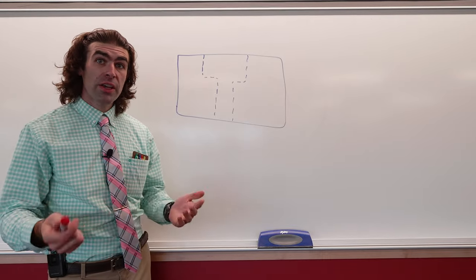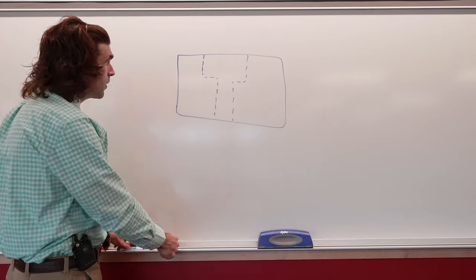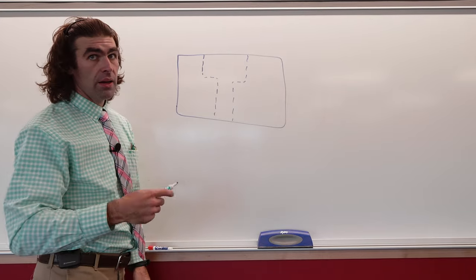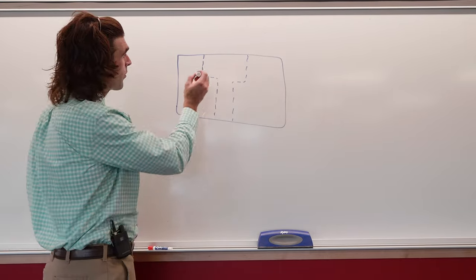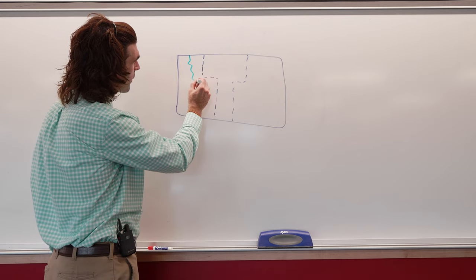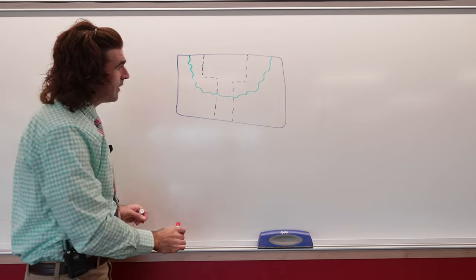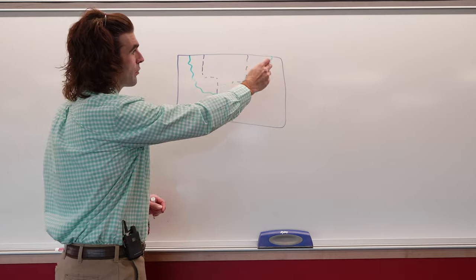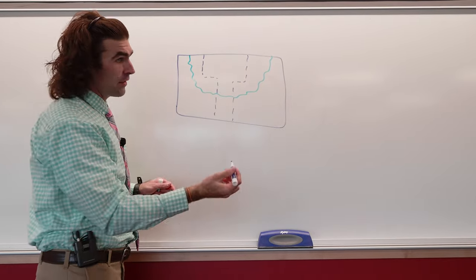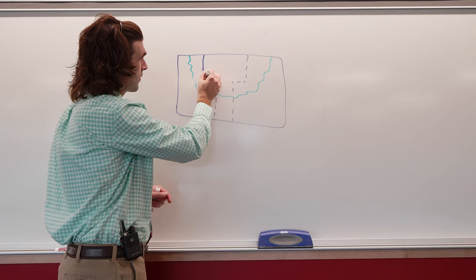To do our section view or broken out section, we'll use a thick freehand line around the area that we want sectioned. Then we're going to convert anything within this short break line, any hidden lines, into visible lines.